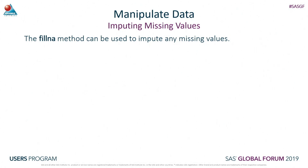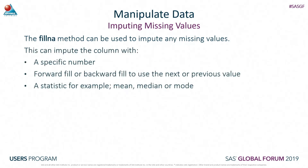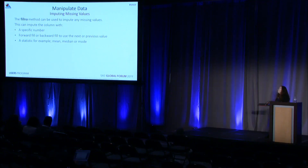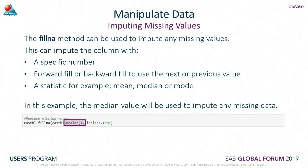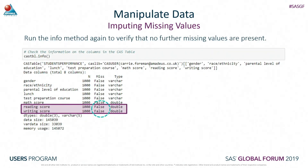So what do we want to do to fix this? I'm going to impute those values. Within Python, we can use a method called the fillNA method, which can be used to impute these values. It has three main options: impute with a specific number, forward fill or backward fill with the previous or next value in that column, or use a statistic such as the mean, median, or mode. In this example, I've chosen to use the median. I've applied the fillNA method to the whole table since we've got two columns with missing values, so both columns will be imputed with the median. If we rerun the info method, there are no longer any missing values.